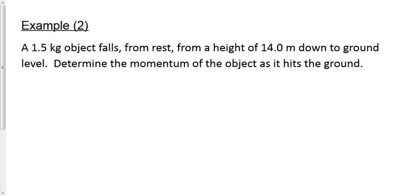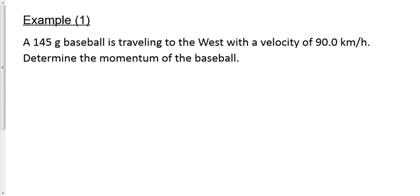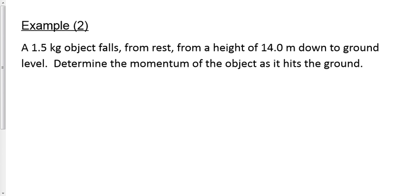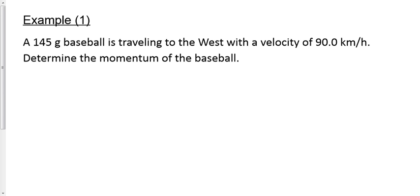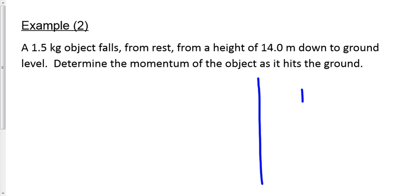Let's take a look at another example question. Example number two in the package that I handed to you yesterday. It says a 1.5 kilogram object falls from rest, from a height of 14 meters down to the ground level. What's the momentum of the object as it hits the ground? This is much like the question we did yesterday. Baseball traveling west, what's its momentum? Object falling down, what's its momentum? What's different about it? We need velocity. We don't have it. We want to find momentum. Momentum is m times v. But we don't have v here. What v do we need, though? Yes, it's the final velocity.